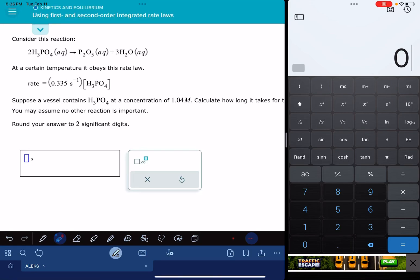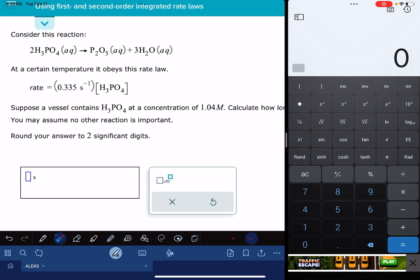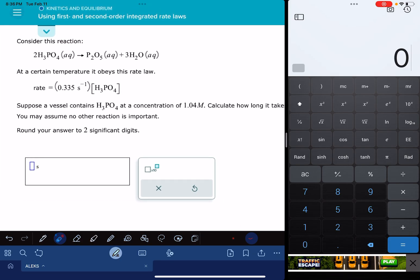In this video, I'll show you how to solve the ALEKS problem called using first and second order integrated rate laws. I've looked at quite a few examples of this problem. I do see that there are a few different variations of it. This version of the problem that we're looking at right now, in my opinion, is the harder version of the problem. And so as I solve this tricky version of the problem, I'm also going to be talking about what the easier versions look like and how you'll go about solving the easier versions of the problem.